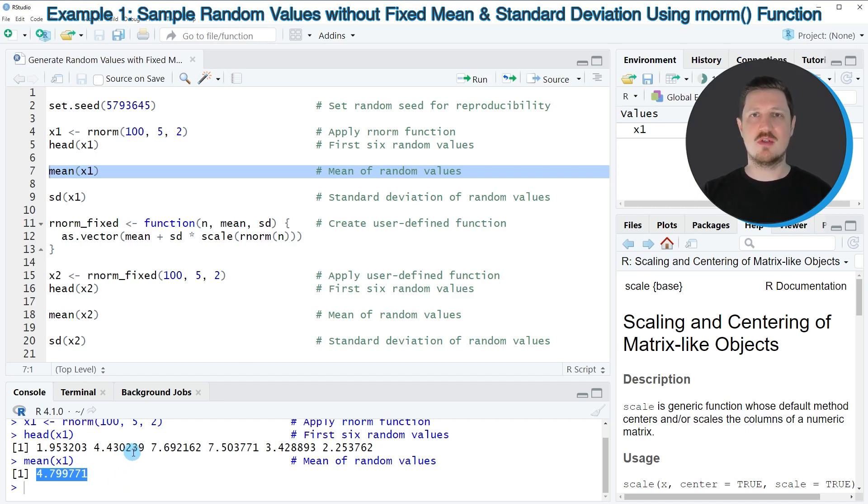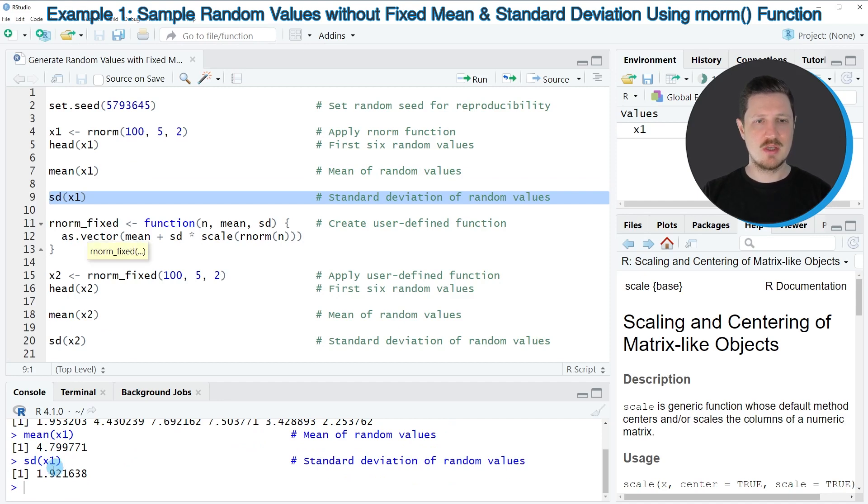And the same is true for the standard deviation that we have specified. So if we check the standard deviation of our vector object by running line 9 of the code, you can see that this standard deviation is also close to the value 2 that we have specified, but it's not exactly true.